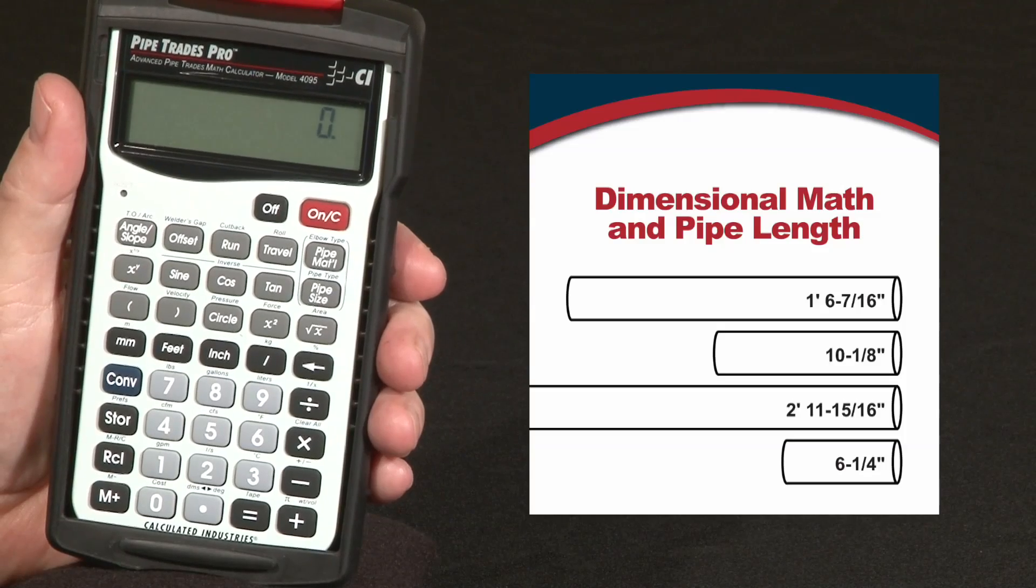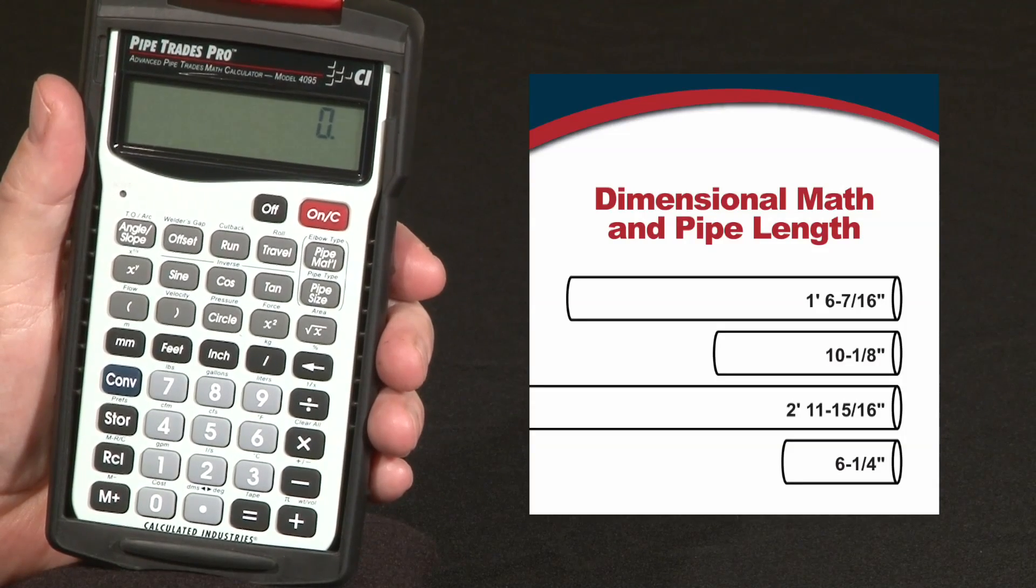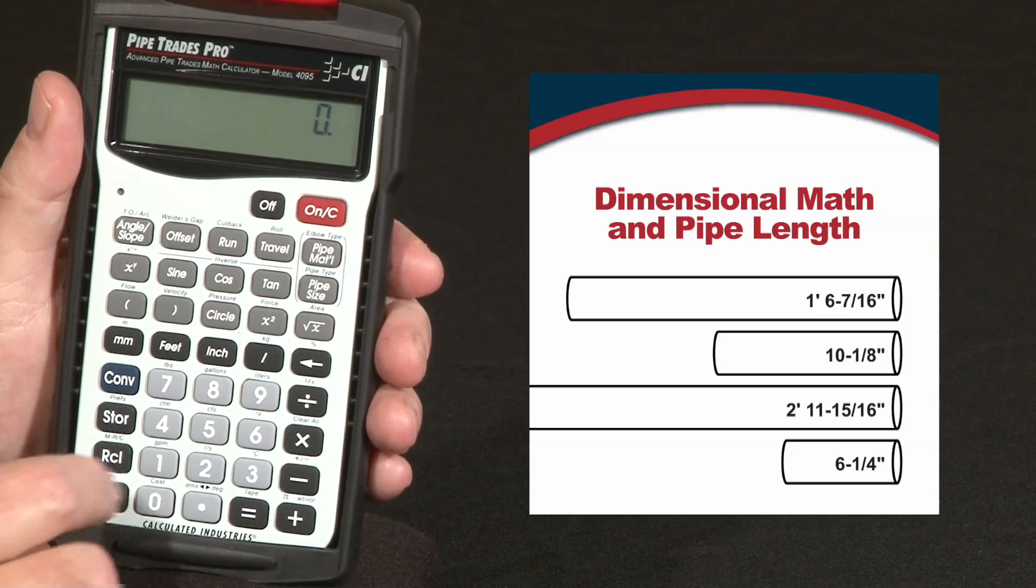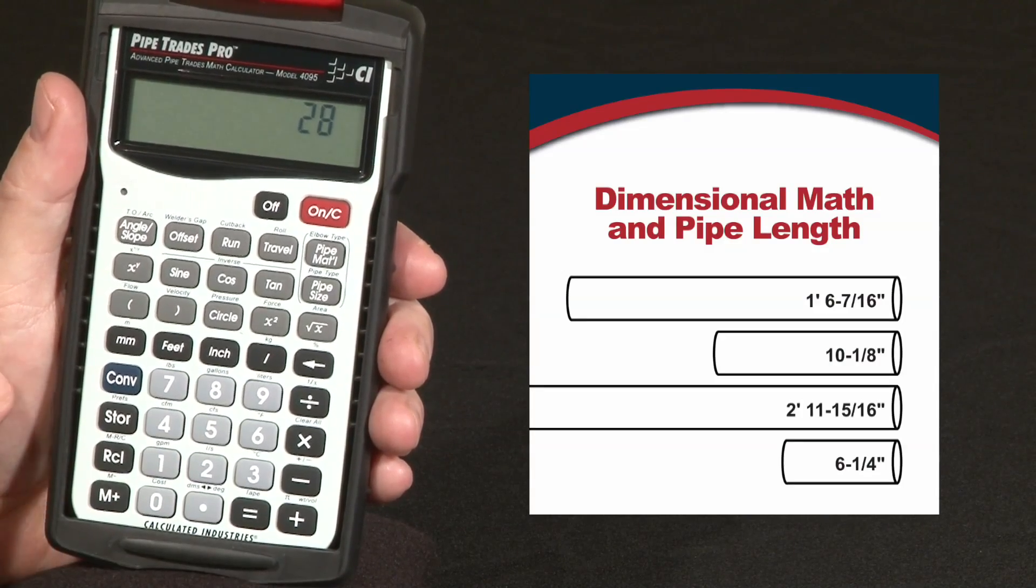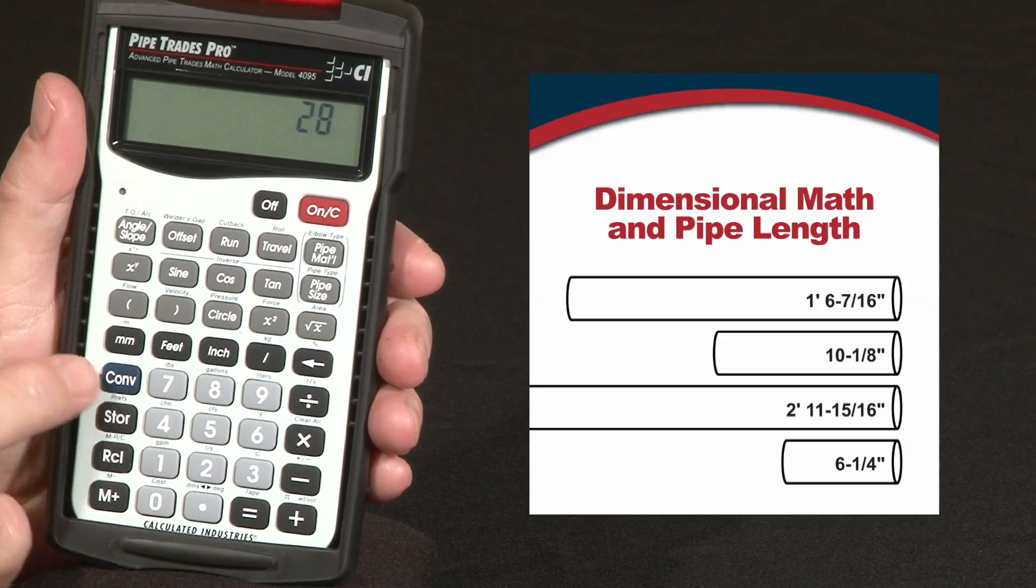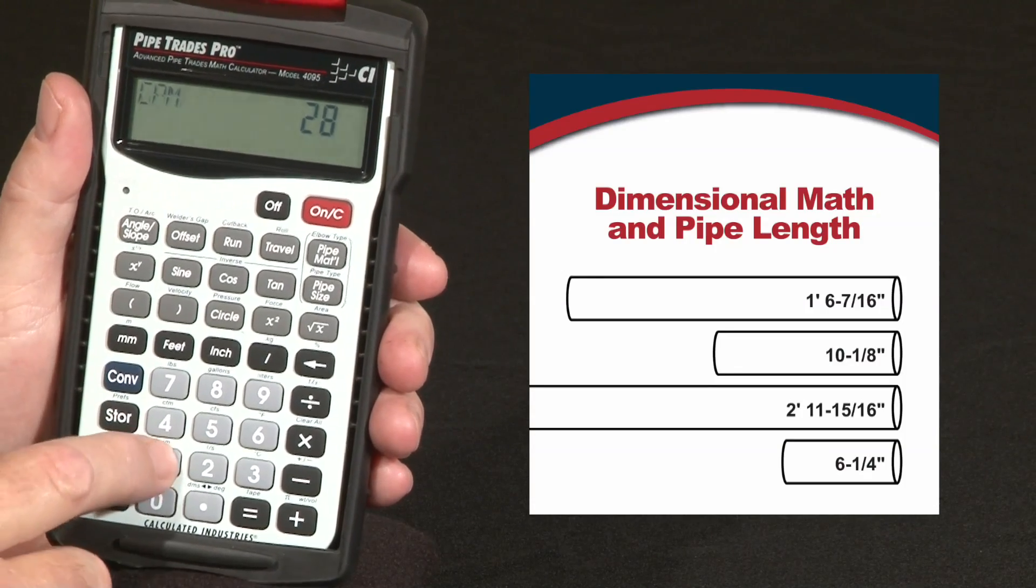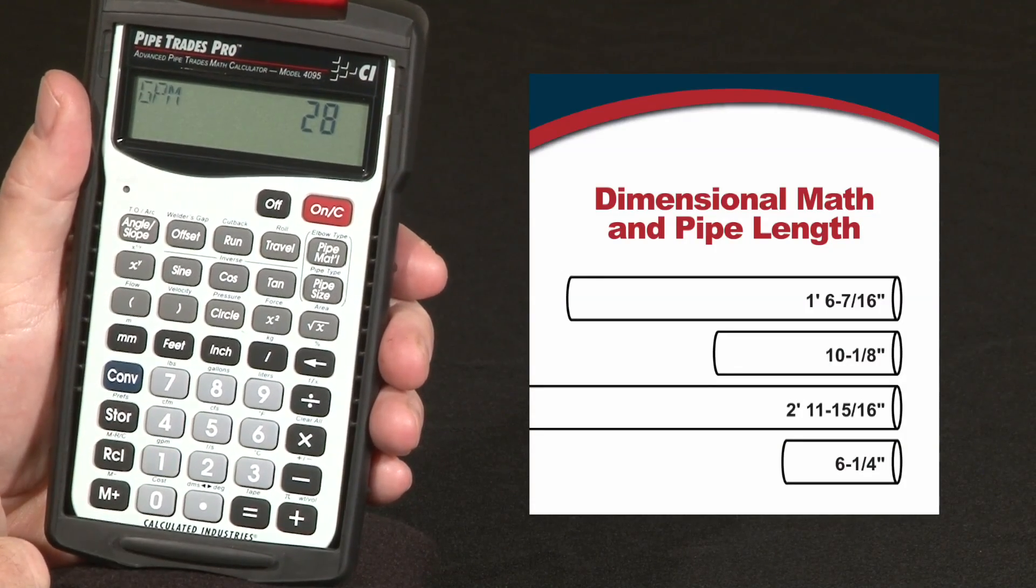Let's say we have a flow rate of 28 gallons per minute and we want to convert the GPM to other dimensional units. We enter 28, and for gallons per minute it's a secondary function, so we use the convert key and one. There's our 28 gallons per minute.